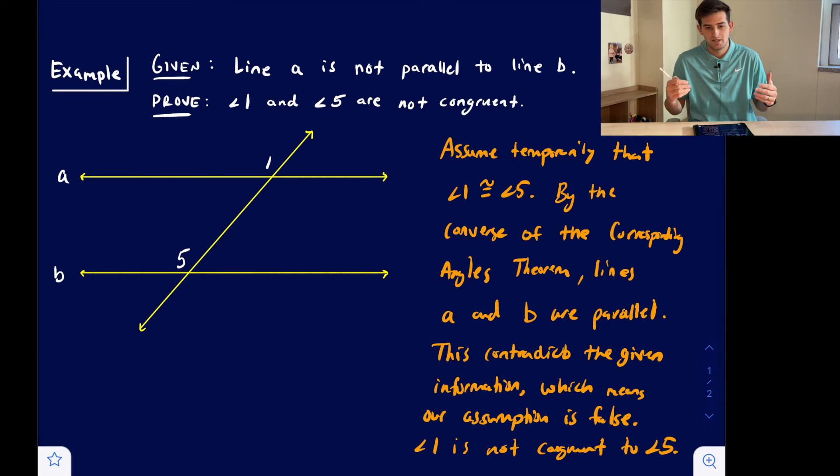...but the lawyer says, hey, at the time of the crime, my client was actually in Seattle. So the lawyer could say, okay, let's assume temporarily that my client is guilty. Well, if my client's guilty, that means they had to be in Chicago at the time of the crime.